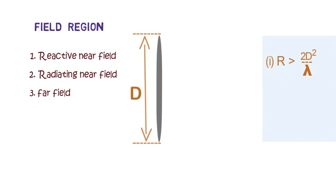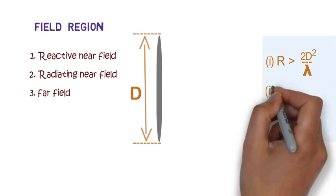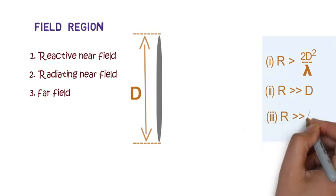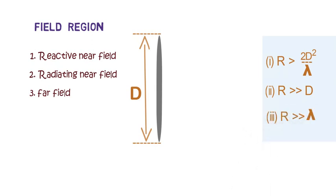The second condition is R must be much greater than D. Here much greater sign represents that the left hand side must be at least 10 times the value on the right hand side. And the last condition is R must be much much greater than the wavelength of the transmitting wave.